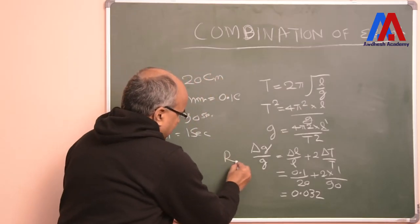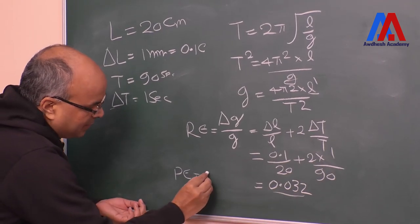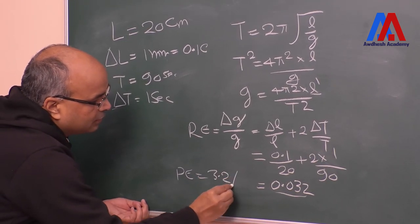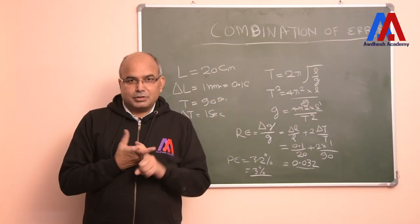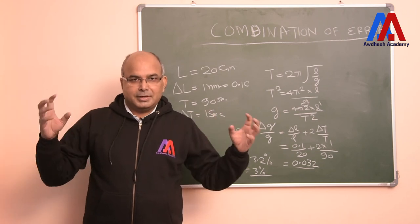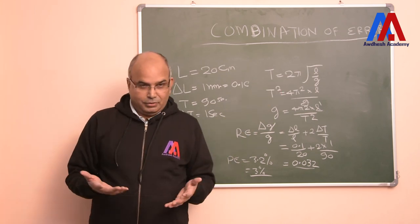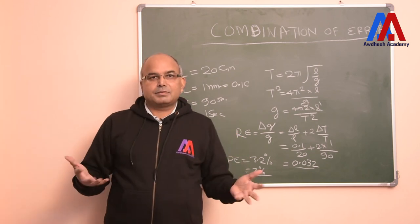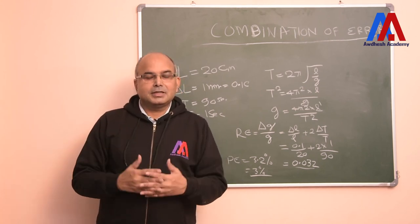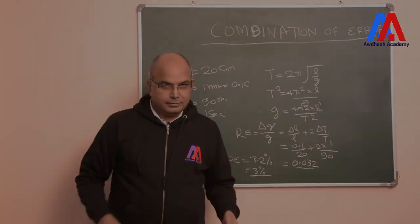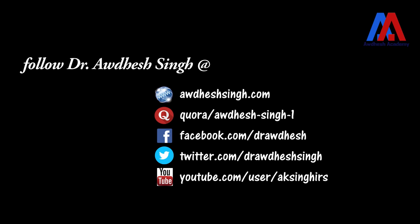So this is your relative error. When we calculate the percentage error, we multiply by 100, and we get 3.2%, which we can approximate to 3%. In this way you have seen how to measure absolute error when more than one measurement is involved, and how to measure relative error for any complex type of problem. Thank you very much for watching. Please continue with this chapter — there are more lectures ahead.